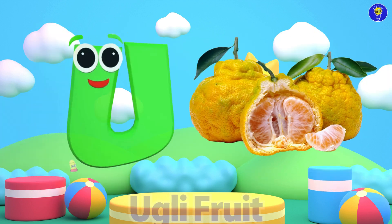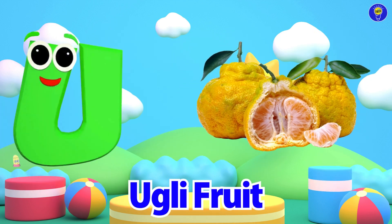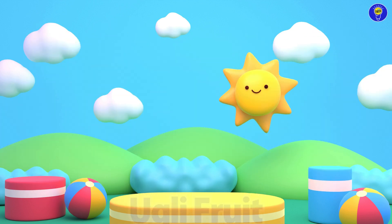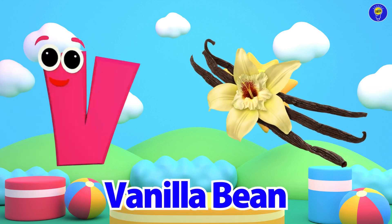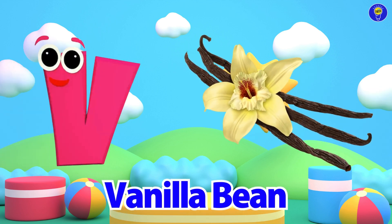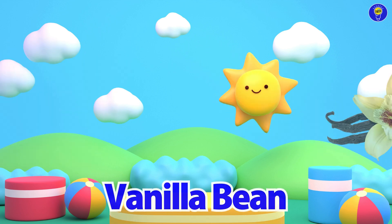U is for ugly fruit. Uh, ugly fruit. V is for vanilla beans. Vh, vanilla beans.